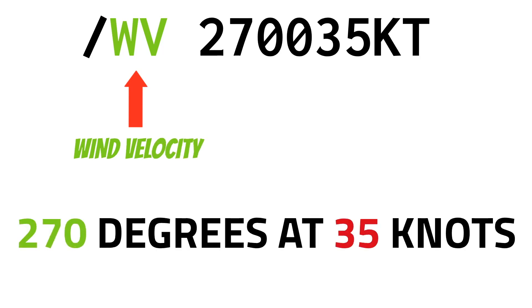WV stands for wind velocity. In one example, the wind velocity is 270 at 35 knots.